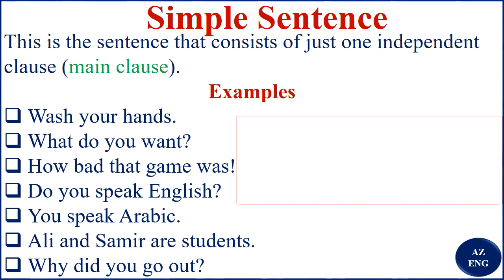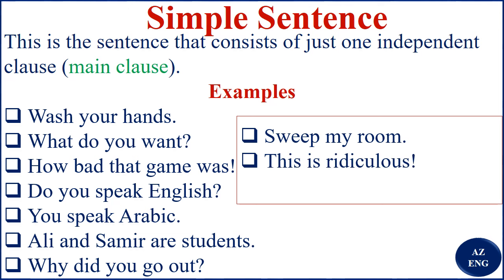'Why did you go out?' is a simple sentence because it has one main clause. 'Sweep my room' is a simple sentence. 'This is ridiculous' — which clearly shows you are not happy — is one independent clause, so it is a simple sentence. 'Sit properly' has one independent clause, so we say it is a simple sentence.